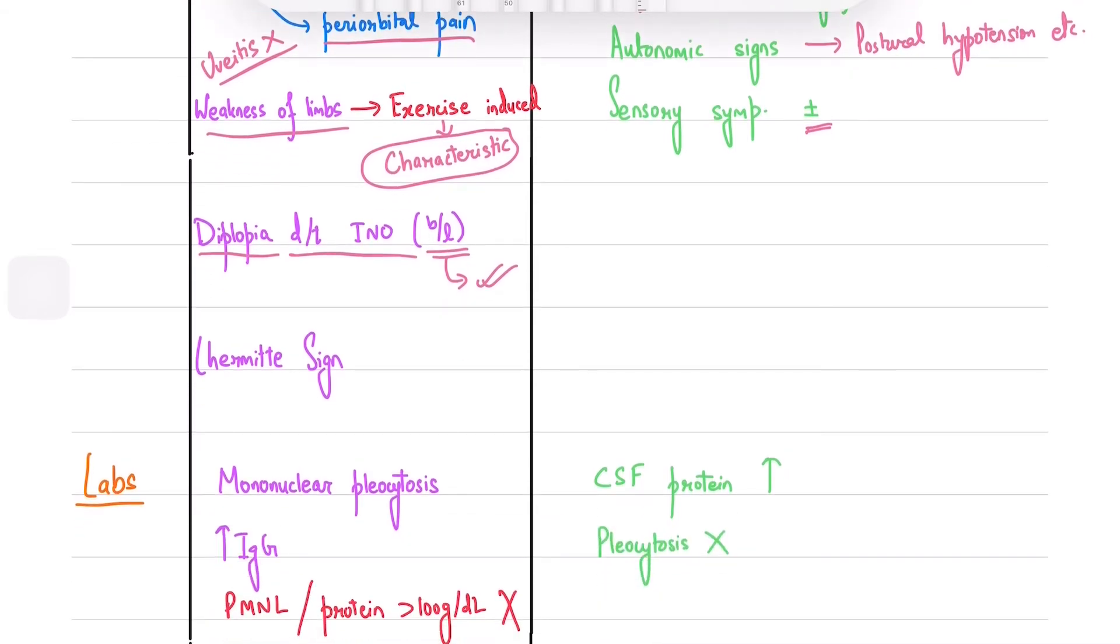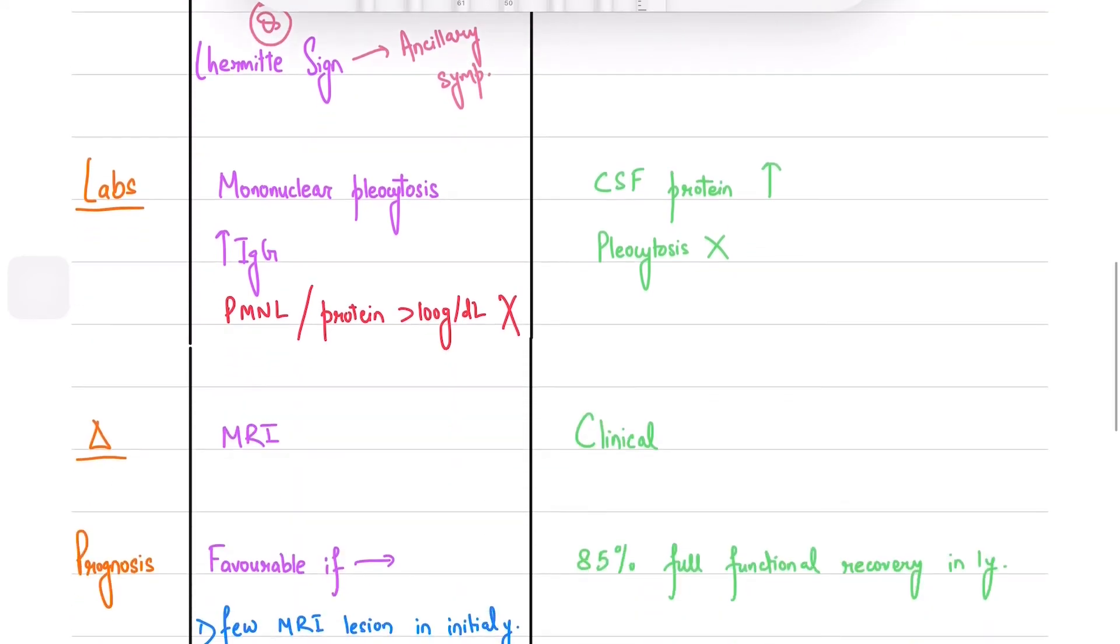Some symptoms are present for a very brief duration and appear very frequently. They are called ancillary symptoms. The most asked among these is Lhermitte sign which is an electric shock-like sensation radiating to the spine upon flexion of the neck.